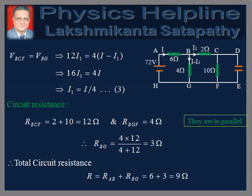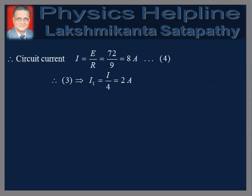Therefore, the total circuit resistance is equal to resistance between AB plus resistance between BG, which is equal to 6 plus 3, equal to 9 ohms. We can find the current drawn from the cell using I = total EMF divided by total resistance. Putting the values and simplifying, we get I equal to 8 amperes.